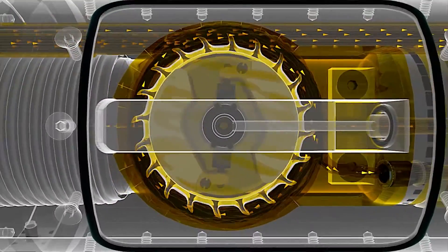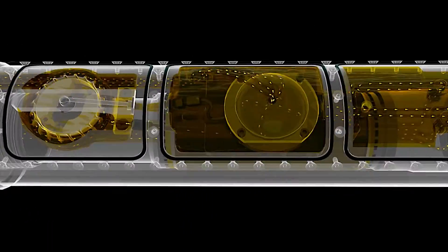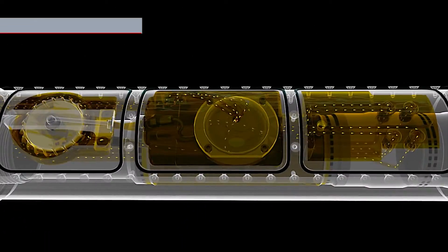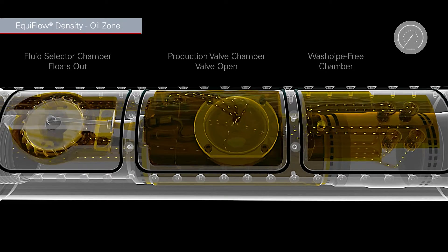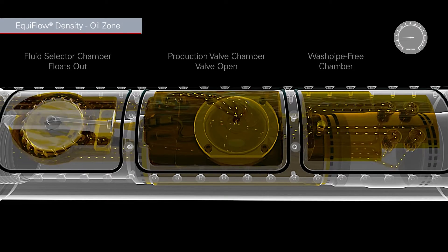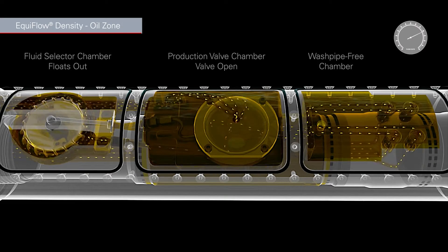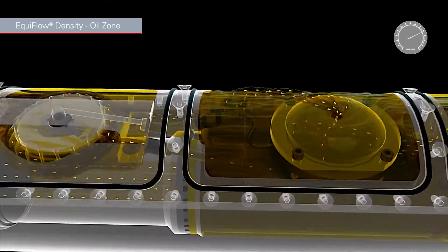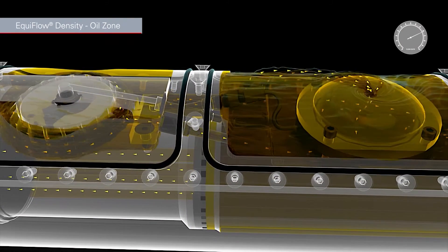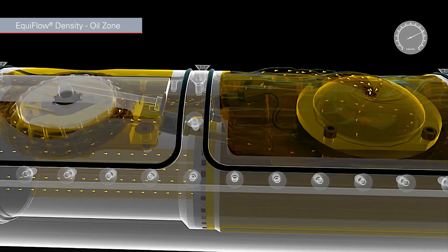The main components of this product are a fluid selector, a production valve, and a wash pipe-free feature. The fluid selector is a turbine that magnifies buoyancy forces and controls a flow path to the production valve with a switching mechanism. This turbine also makes the device orientation independent.